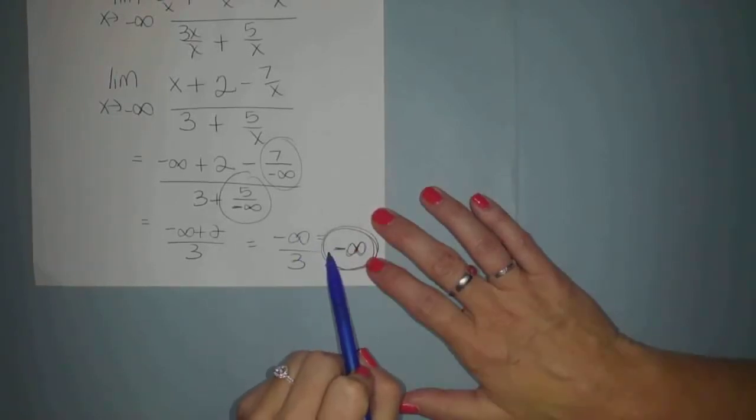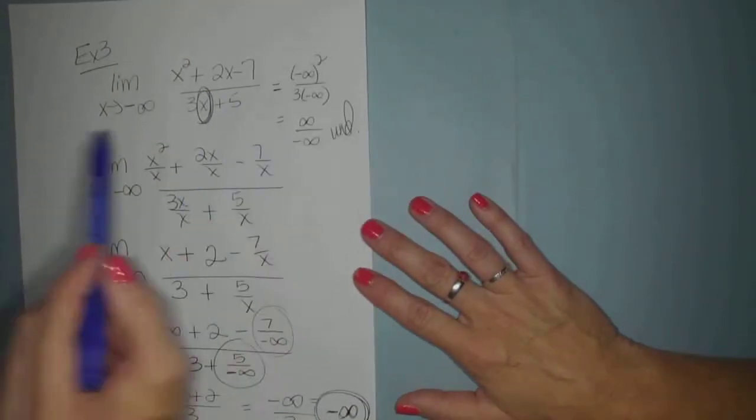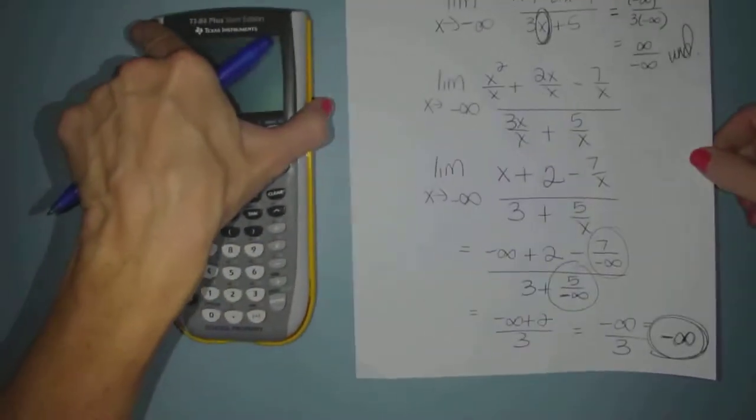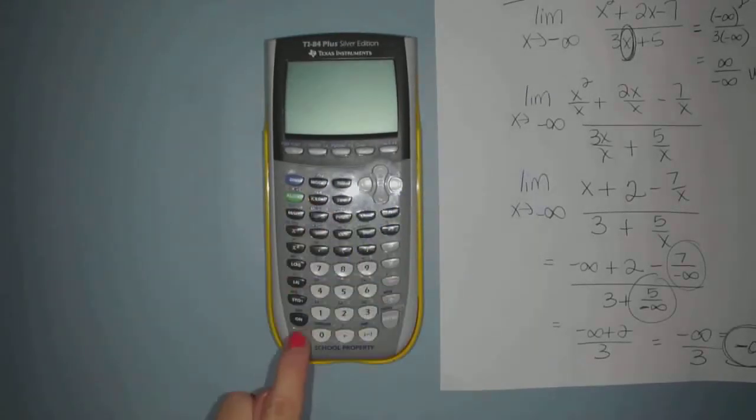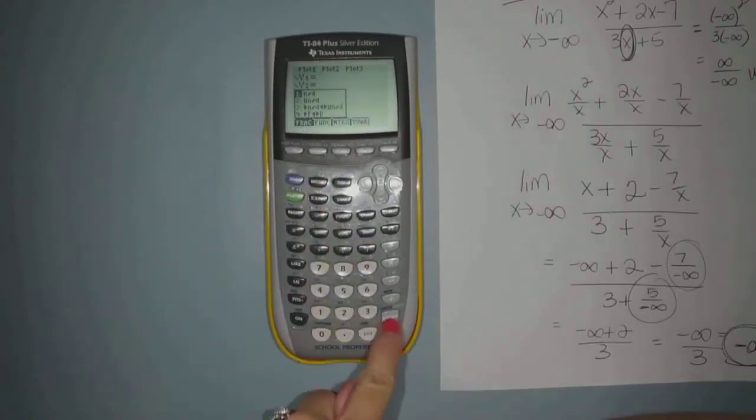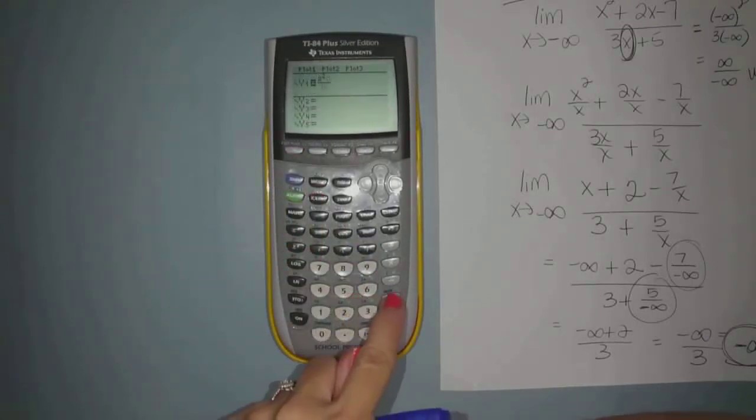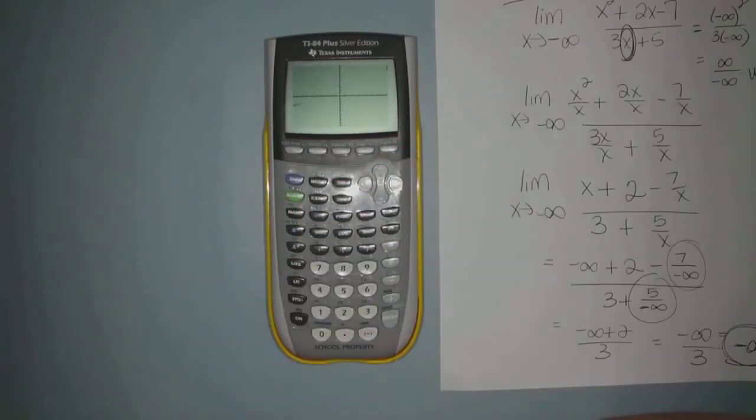Now to confirm this, even though I haven't been making you graph these rational functions, I do have my TI-84. And I just want to show you how I can confirm this answer on it. So if I bring up the TI and turn it on and go to y equals, I'm going to clear out my old stuff. And I'm going to go ahead and type in this rational function. So I have x squared plus 2x minus 7 all over 3x plus 5. And I'm going to hit graph. And here's what the graph looks like.